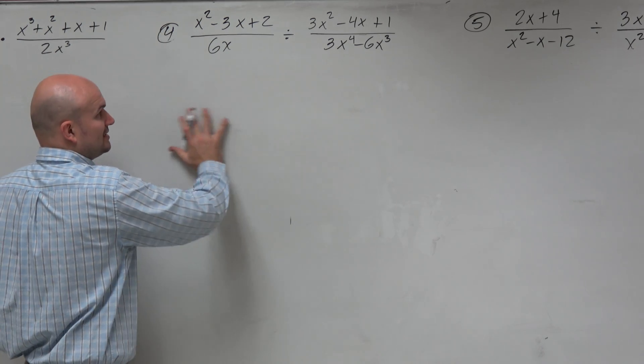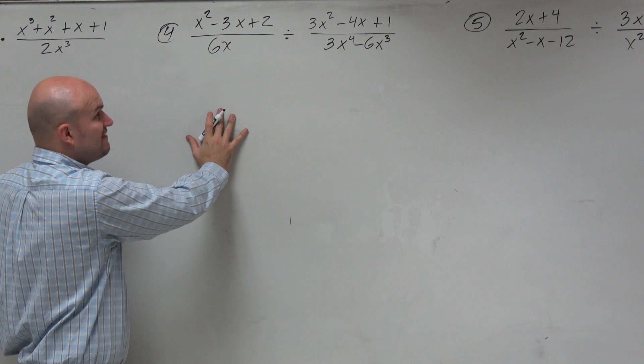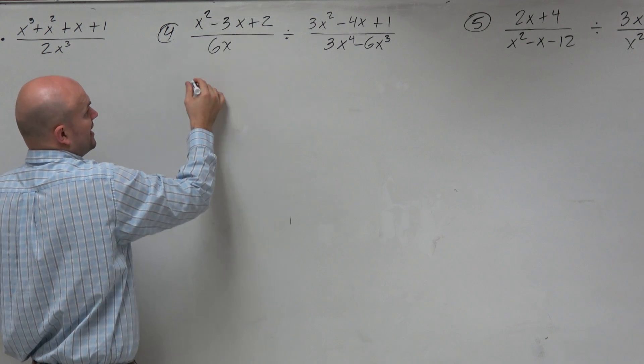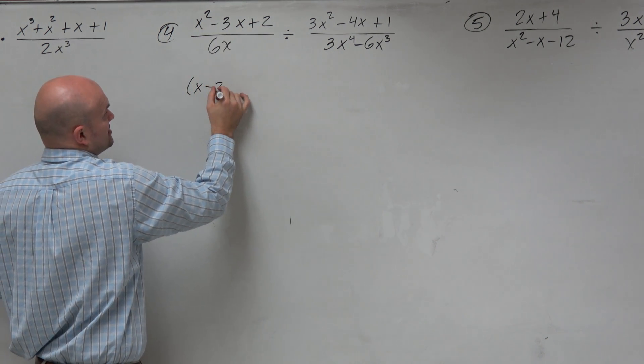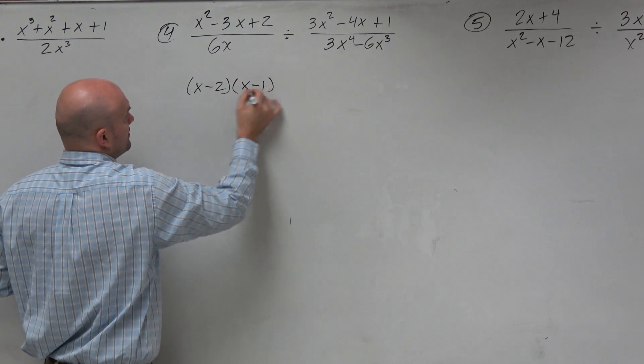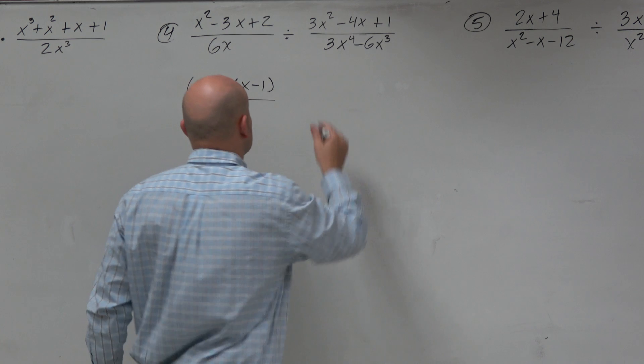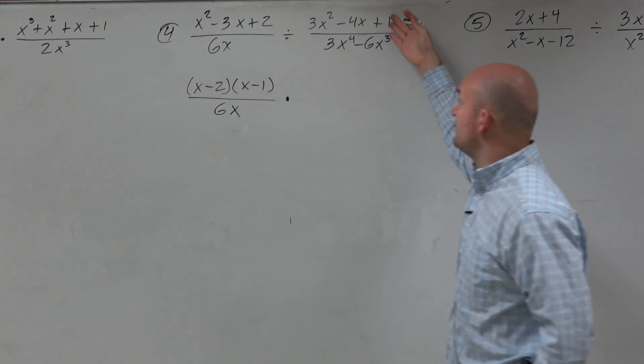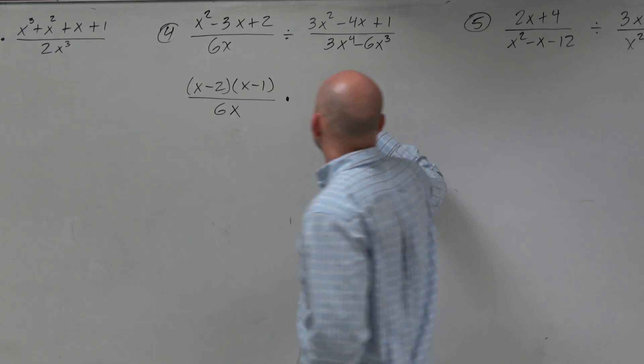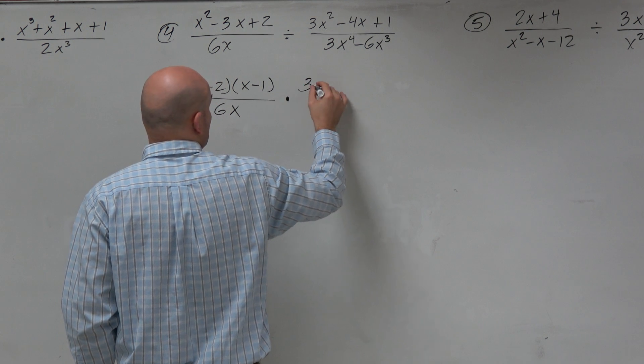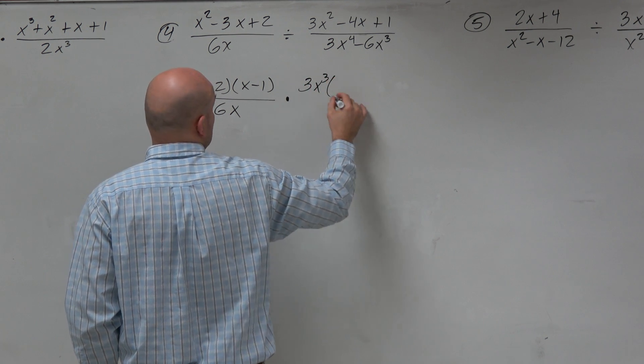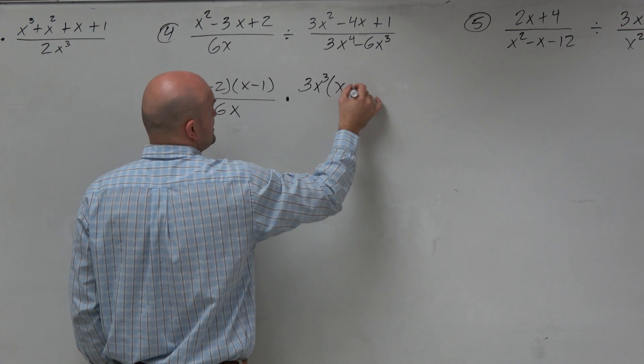So what I'm going to do, though, is I'm going to rewrite this as a multiplication, but I'm also going to factor it. So up top here, I see that I can factor this into an x minus 2 times an x minus 1. There's really nothing I can rewrite or factor out with 6x. I'm going to turn this into a product by multiplying by its reciprocal. In the numerator, I can factor out a 3x cubed, and that's going to leave me with an x minus 2.